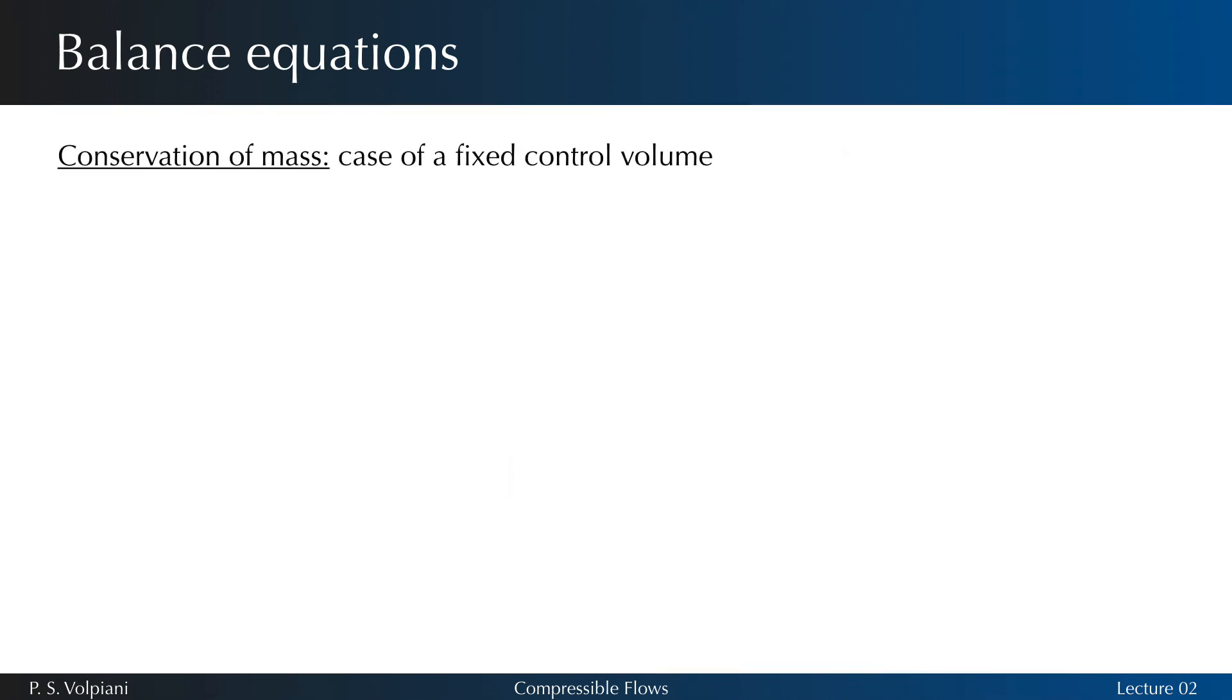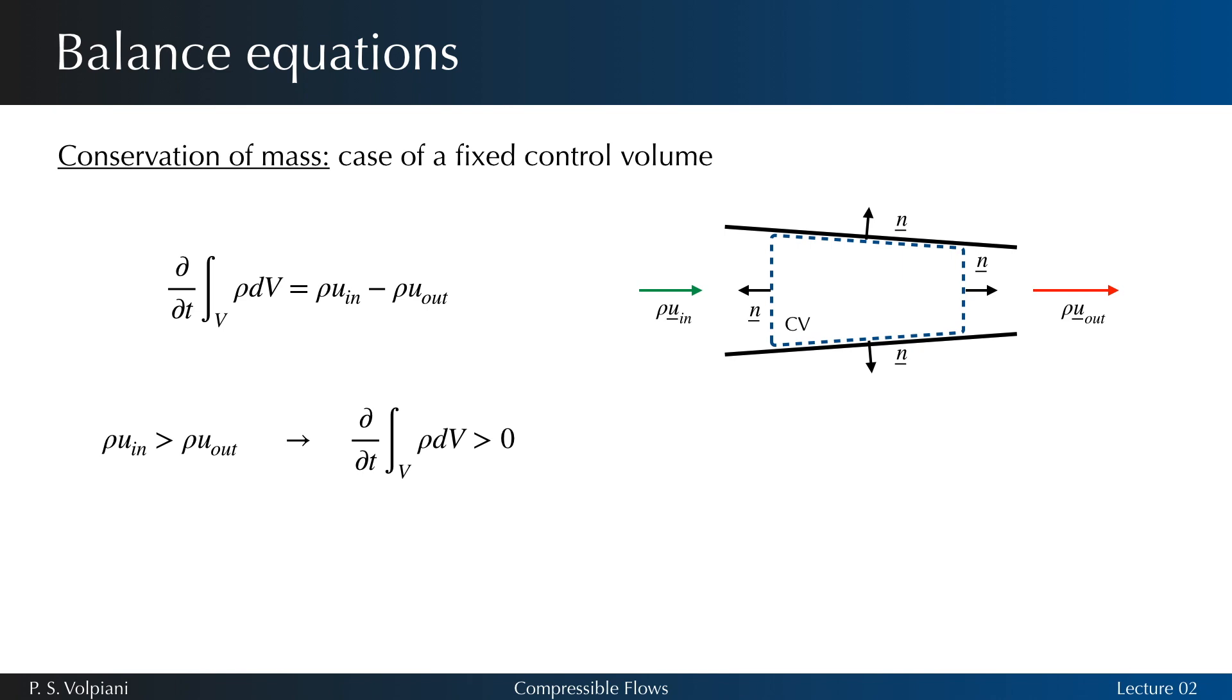Let's consider now a fixed control volume V with control surface S through which the fluid flows freely. The principle of mass conservation applied to control volume V means that the rate of change of mass inside V equals the mass flow through control surface S. If more mass enters than leaves, the rate of change will be positive, expressing an increase of mass in V. In the opposite case, a negative rate of change corresponds to mass of fluid leaving V greater than the mass entering it.